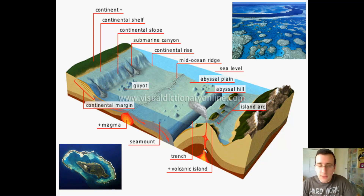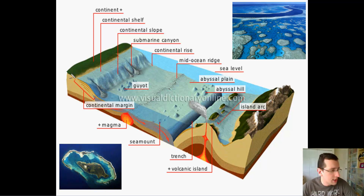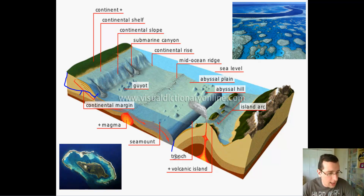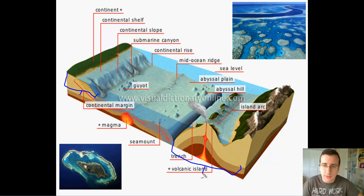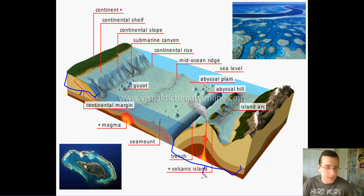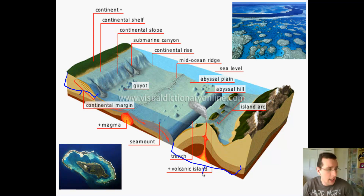If you are part of a continent, you are part of one continuous continental crust — all the way to the end of the continental crust is considered part of a continent. That's the geological classification: anything that's part of the continental crust is automatically part of the continent, which means some of the continent is actually underwater.